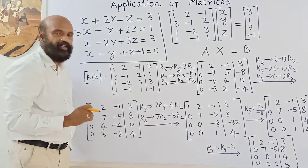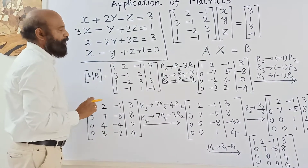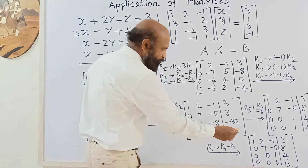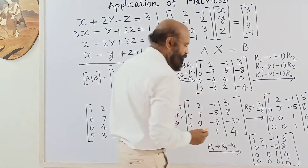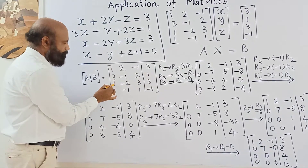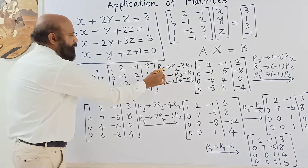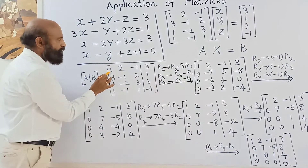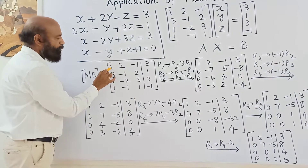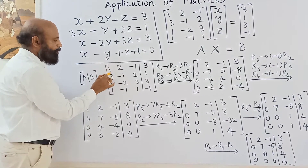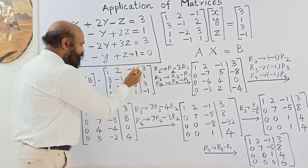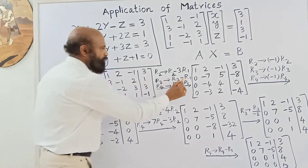By a sequence of elementary transformations, the augmented matrix is to be converted into row echelon form. Below the leading 1 in the first column, we need zeros. For the second row, since the entry is 3, we subtract three times the first row. Multiplying the first row by 3 and subtracting from the second row gives zero in that position.